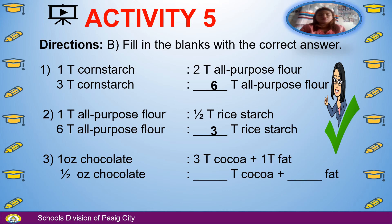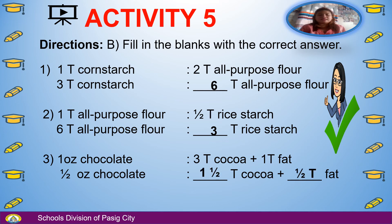Number 2: 1 ounce of chocolate equals 3 tablespoons of cocoa plus 1 tablespoon of fat. So one-half ounce of chocolate equals blank tablespoons of cocoa plus blank tablespoon of fat — answer: 1 and one-half tablespoons of cocoa plus one-half tablespoon of fat.